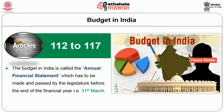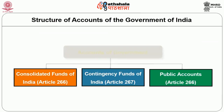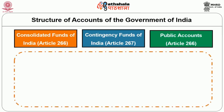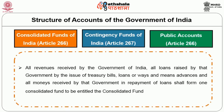Before discussing the budgetary process, we must discuss its features for a better understanding. There are three funds for the government transactions. First, Consolidated Fund of India under Article 266 — according to this article, the whole or part of the net proceeds of revenues, all revenues received by the Government of India, all loans raised by that government by the issue of Treasury bills, loans or ways and means advances, and all money received by the government in repayment of loans shall form part of the Consolidated Fund.